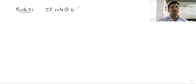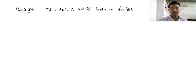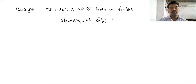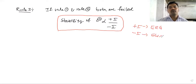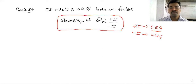Rule 3: if Rule 1 and Rule 2 both fail, then stability of a carbocation is directly proportional to the plus-I effect and inversely proportional to the minus-I effect. Plus-I groups are electron-releasing groups; minus-I groups are electron-withdrawing groups. Minus-I groups increase positive charge, making the carbocation less stable, while electron-releasing groups make it more stable.